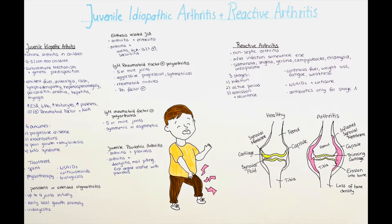Some of the laboratory values that we can see include a high erythrocyte sedimentation rate, low hemoglobin, high leukocytes and platelets, as well as often negative findings of anti-nuclear antibodies and negative IgM rheumatoid factors. However, both of those can be positive as well. The differential diagnoses include infections, malignant diseases, systemic lupus erythematosus, vasculitis, and many more.